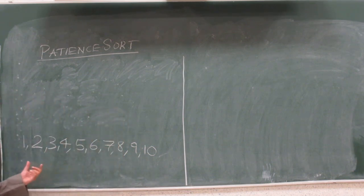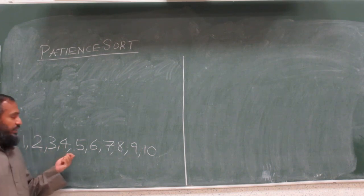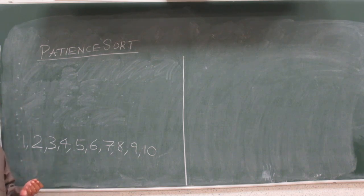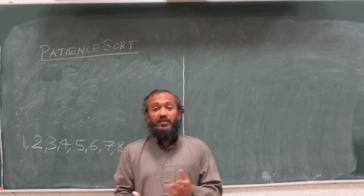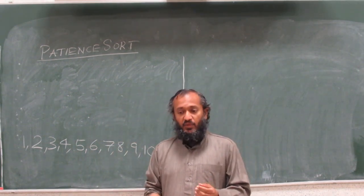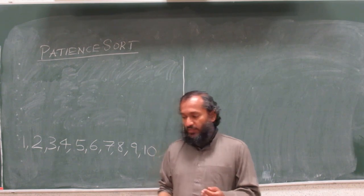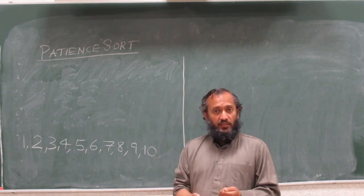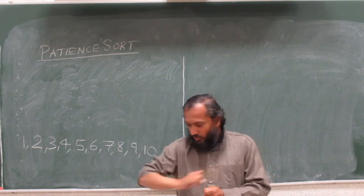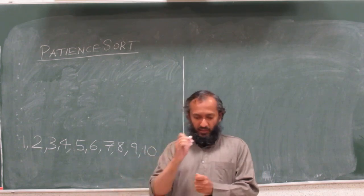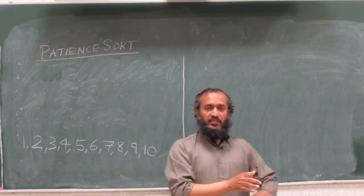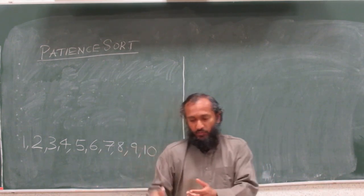This sorting method is used by many people in analog situations. Imagine a teacher has a hundred papers, three hundred papers - exam papers - and wants to alphabetize them. One way to do it is to do bucket sort: quickly go through, throw all the A's and B's and C's here, then a bucket of D, E, F's, G, H, I's, and so on and so forth, and then sort each little group.